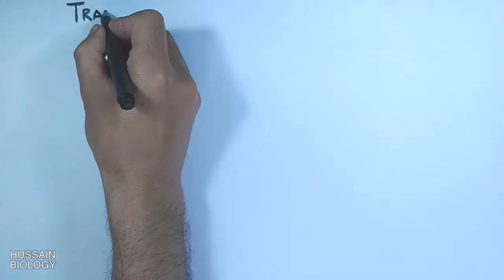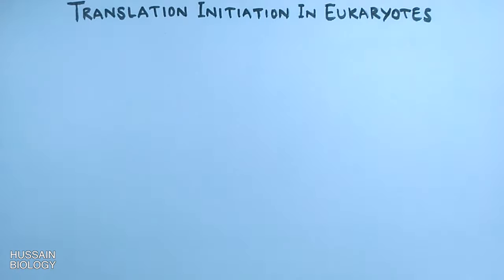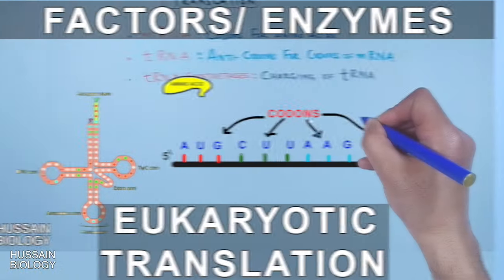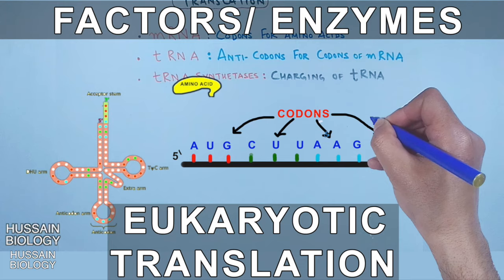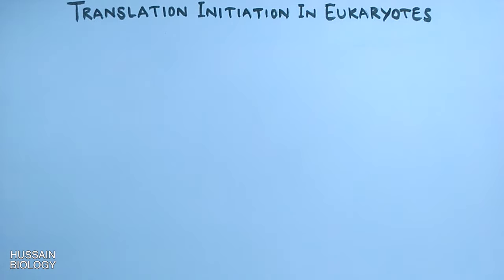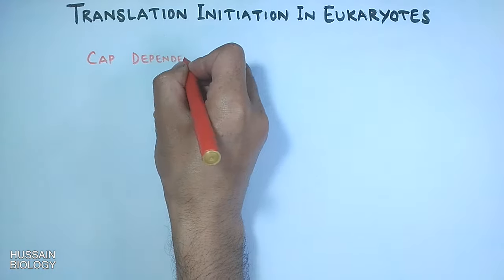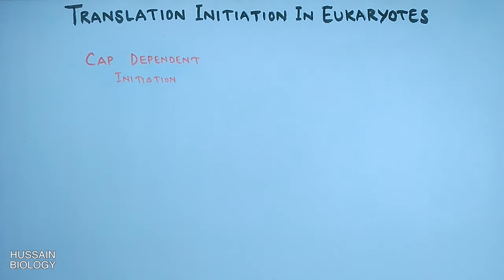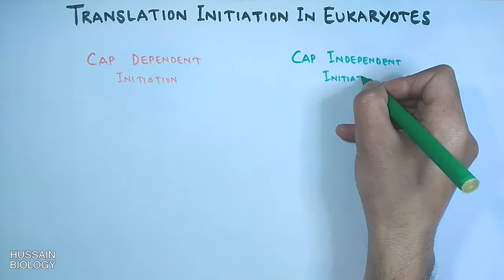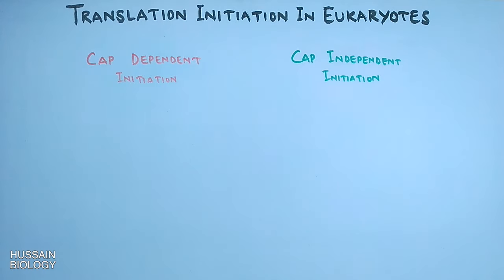In this video we will be discussing the translation initiation in eukaryotes. The enzymes and factors in eukaryotic translation have already been discussed in previous lectures; the link is in the description. Translation initiation in eukaryotes is initiated via two pathways: cap-dependent initiation and cap-independent initiation.